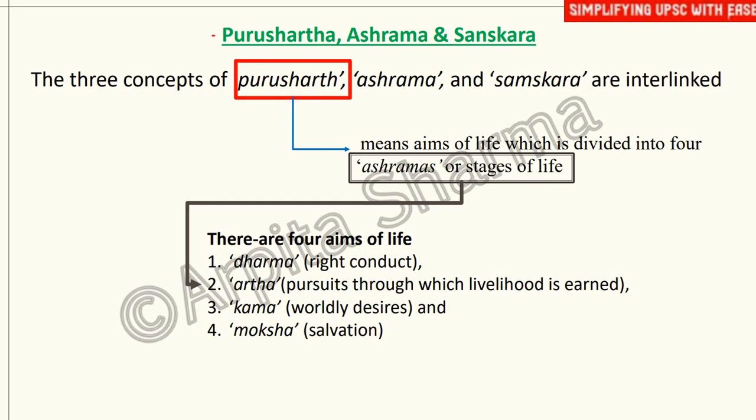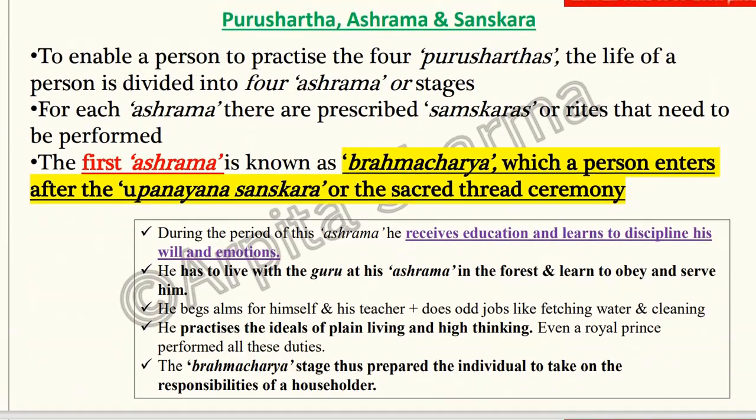The four Purusharthas are: Dharma — right conduct; Artha — earning your livelihood; Kama — satisfying your worldly desires such as having a home and feeding your family; and Moksha — salvation, which means merging into the universal consciousness.